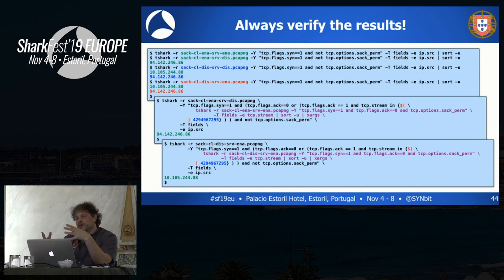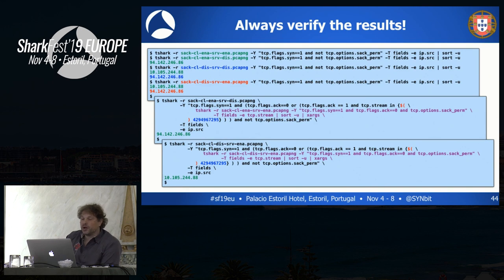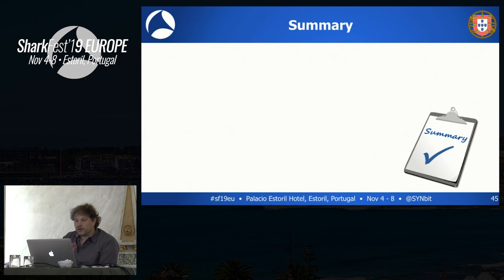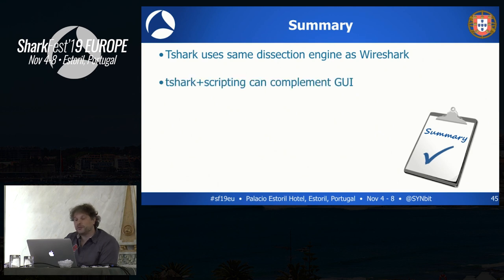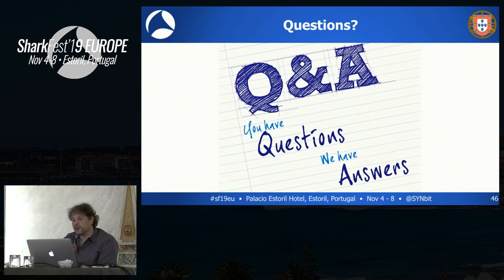This can get a little complicated for specific questions, but at least it gives the right results. In short: T-Shark uses the same dissection engine as Wireshark, so you have all the same fields available. If you use T-Shark for scripting, you can complement things you can do in the graphical Wireshark. And if you use little building blocks and combine them, you can really enhance and create wonderful things to extract information from your trace file. That leaves me to you — if you have any questions about using T-Shark.